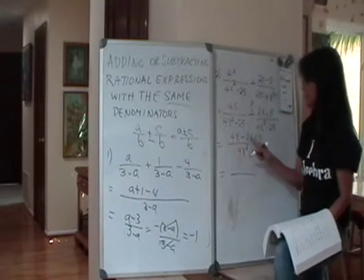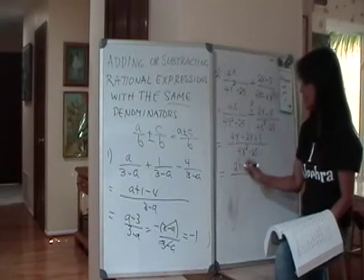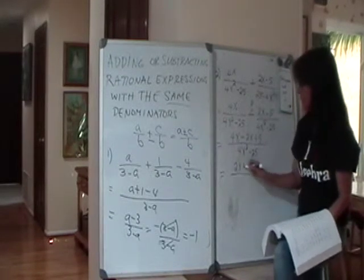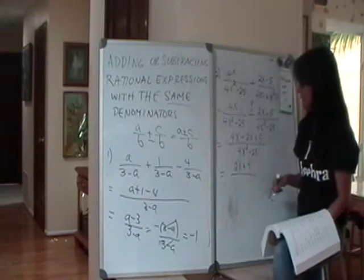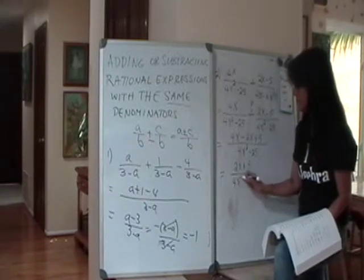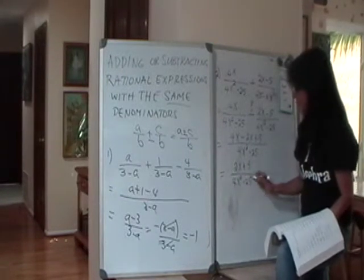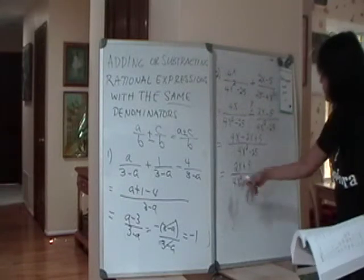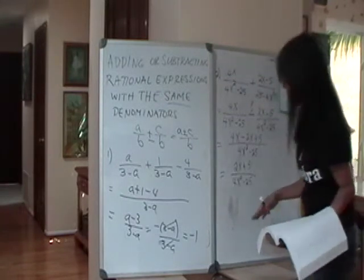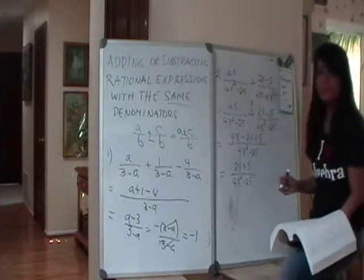So you'll have 4x minus 2x, like terms, is 2x. And then you have a plus 5. And then you have your 4x squared minus 25. And you step back and look at your answer. And before you leave it, try to make sure that it's in simplest form.